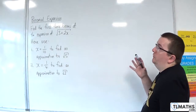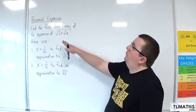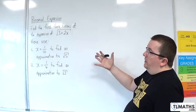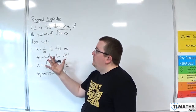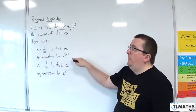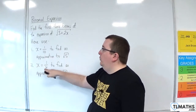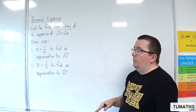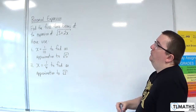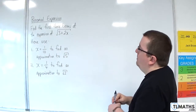In this video, we're going to find the first three terms of the expansion of the square root of 3 plus 2x. Then we're going to use that expansion with x equal to 1 over 10 to find an approximation of root 5, and then we're going to use x equals 1 quarter to find an approximation to root 2. So first job: find the first three terms of the expansion of the square root of 3 plus 2x.